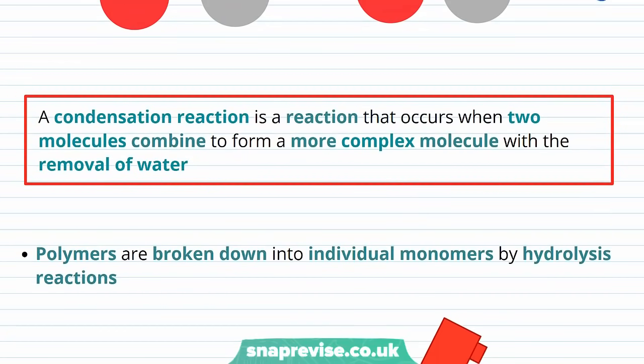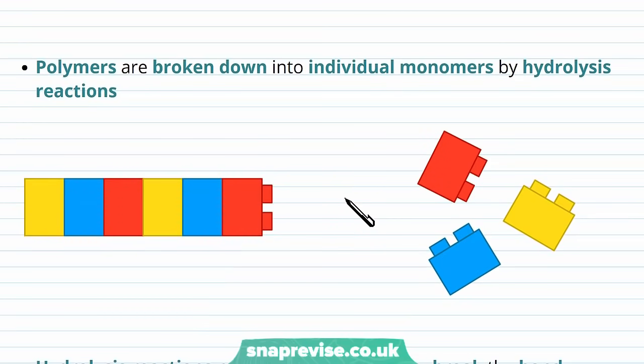So by definition, a condensation reaction is a reaction that occurs when two molecules combine to form a more complex molecule with the removal of water. And that can be a monomer joining a chain or just two monomers binding together. So that's how we make polymers.